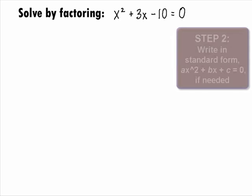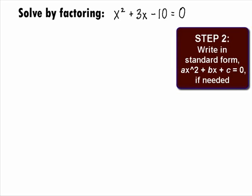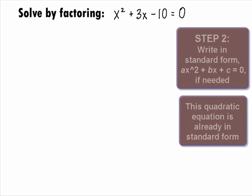In Step 2, we want to write this quadratic in standard form if needed. Standard form for a quadratic equation is ax squared plus bx plus c equals 0. In this case, our equation is already in standard form.